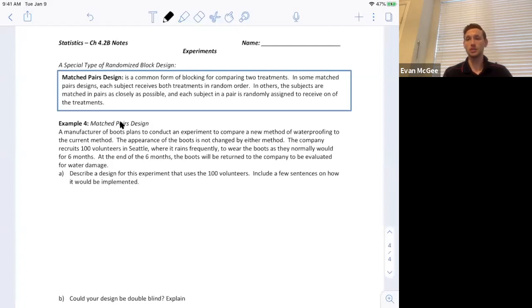So this obviously is going to be a good chance to do a matched pairs design because we don't want to compare Joe and Jack which boots had more wear or more wear or tear or which ones had more water damage because what if Jack was in the rain more often than Joe? So we don't want to compare one person to another. It would be best if we treated each person as a block and Jack would get his right boot has the old method or the current method of waterproofing and his other foot has the new method of waterproofing. That way we're only comparing the boots that have been in similar weather.